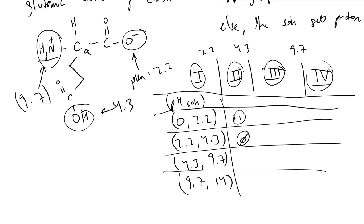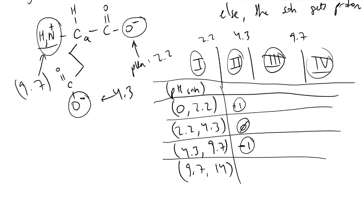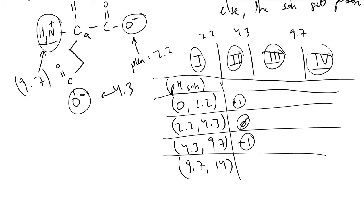If we continue to raise the pH of our solution, our solution is going to want protons more and more. This carboxylic acid will then donate its proton to the solution. The molecule will then take on a total charge of -1.